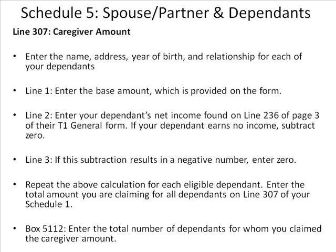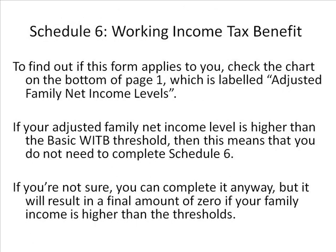Line 307, Caregiver Amount: enter the name, address, year of birth, and relationship for each dependent. Line 1: enter the base amount. Line 2: enter your dependent's net income from line 236. If your dependent earns no income, subtract 0. If the subtraction results in a negative number, enter 0. Repeat for each eligible dependent and enter the total on line 307 of your Schedule 1. In box 5112, enter the total number of dependents for whom you claim the caregiver amount. To find out if Schedule 6 applies to you, check the chart at the bottom of page 1 labeled Adjusted Family Net Income Levels. If your adjusted family net income is higher than the basic WITB threshold, you do not need to complete Schedule 6.